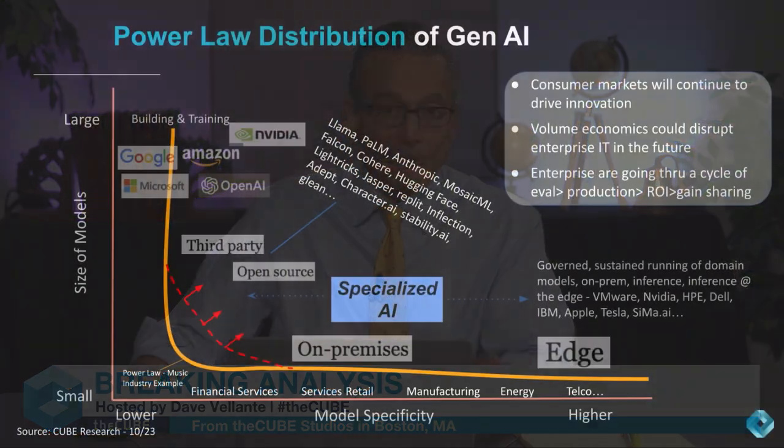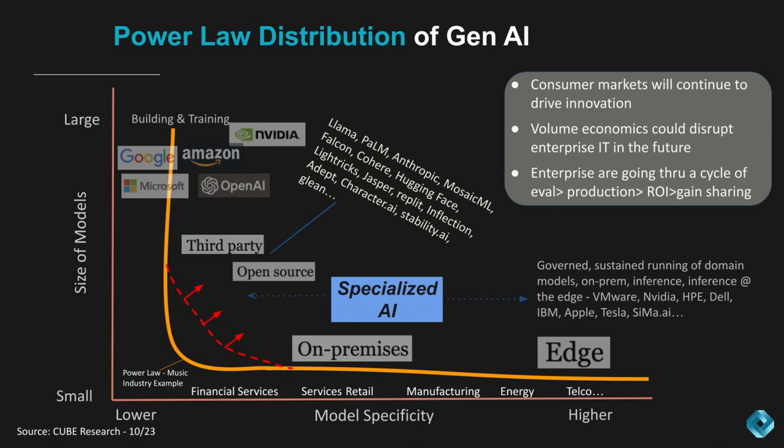This doesn't mean you won't see smaller domain-specific models deployed in the cloud — you will, absolutely. The point is these models are going to be data location dependent. The long tail is going to have little camel humps along that curve where there will be organizations in high-performance computing and super-computing applications that use very large data sets. So keep that in mind as well.